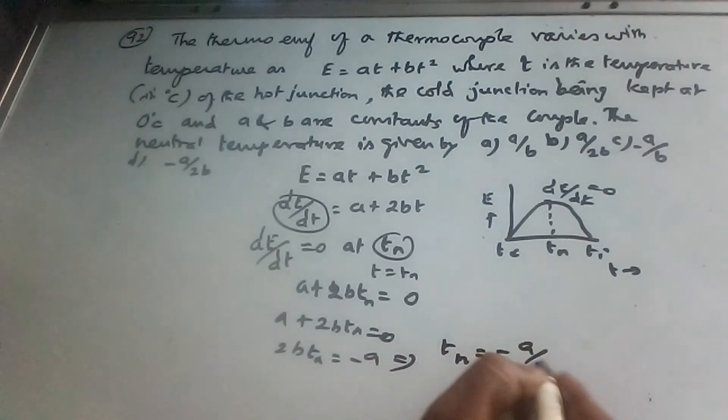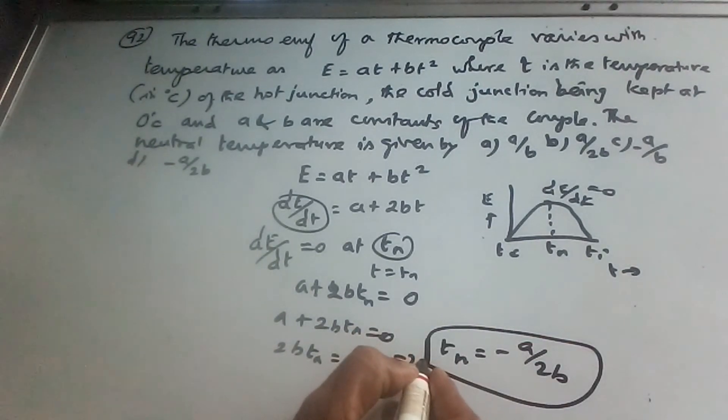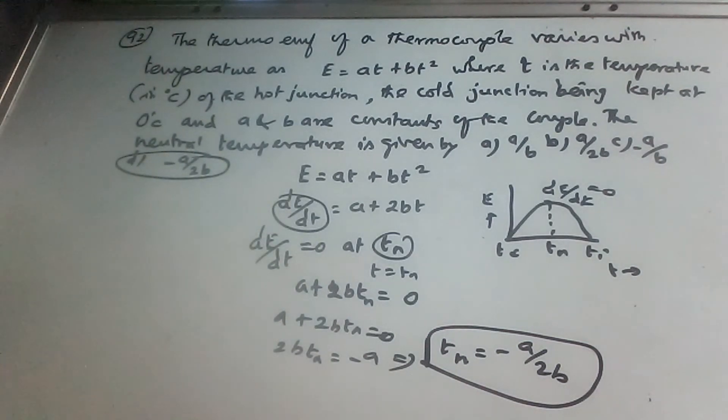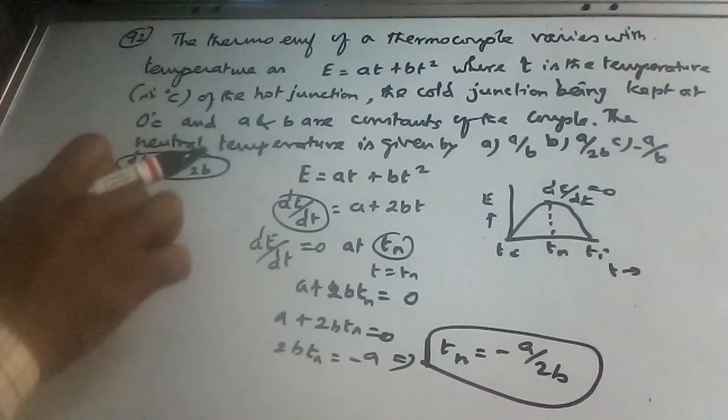So the correct option is the fourth one: minus A by 2B.